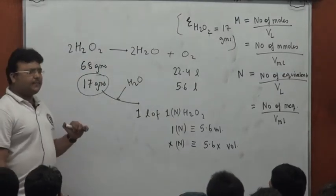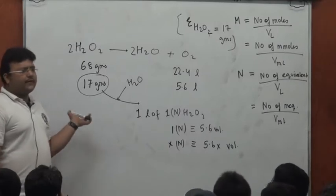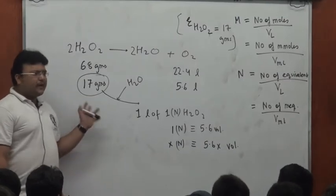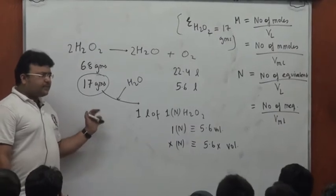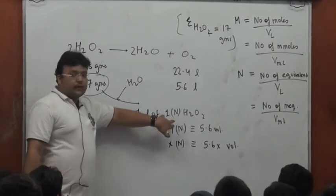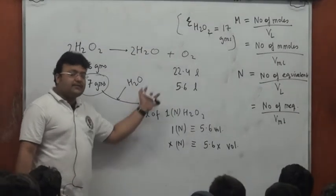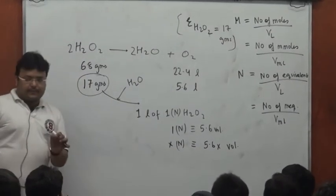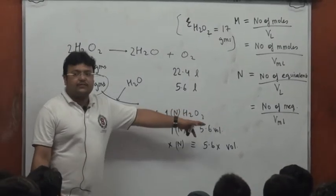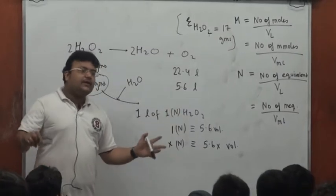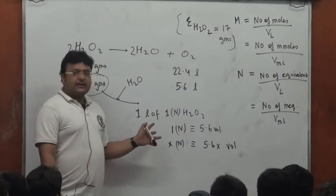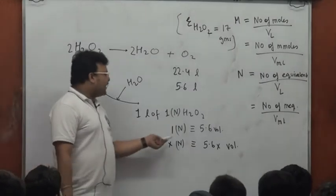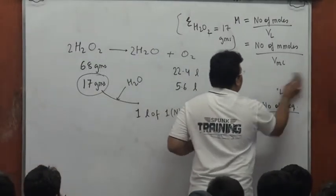The most convenient way to relate the two: I took one equivalent of H₂O₂, made one liter of solution — that's one normal. Because one liter gives 5.6 liters of oxygen, that's the premise of volume strength. So one normal equals 5.6 volume, two normal equals 11.2 volume, and x normal equals 5.6x volume. Volume Strength = Normality × 5.6.